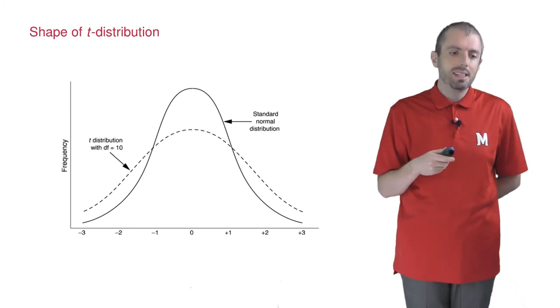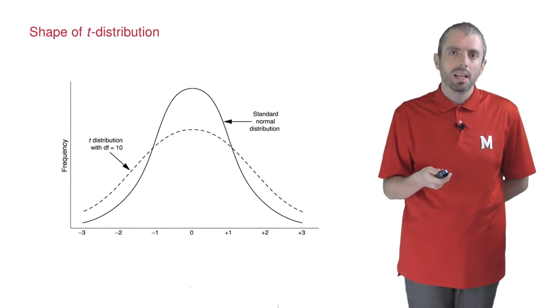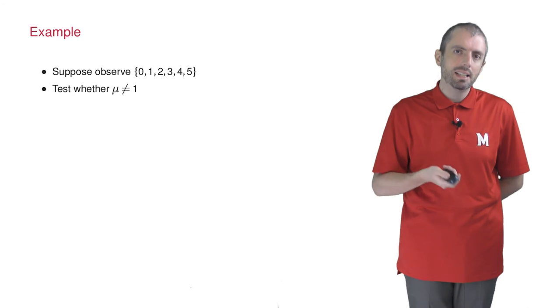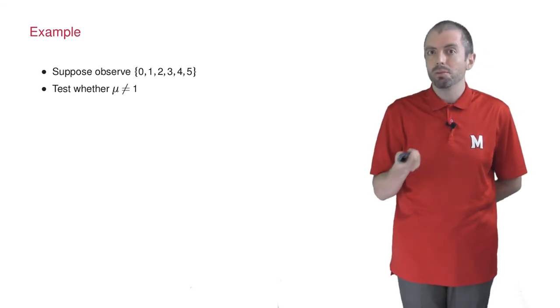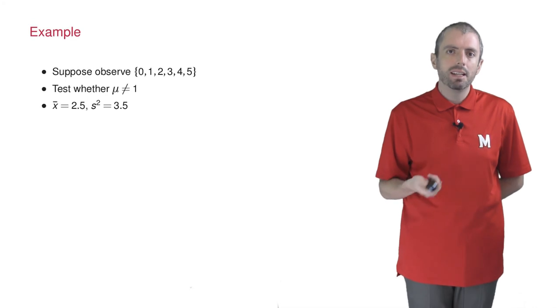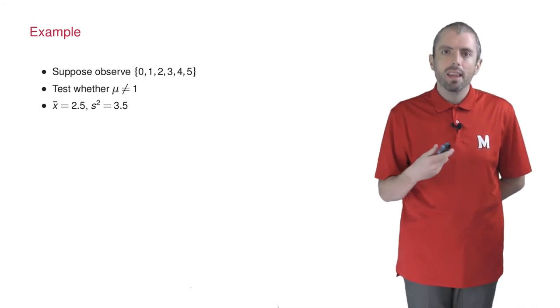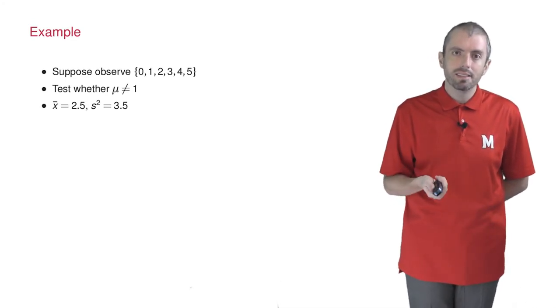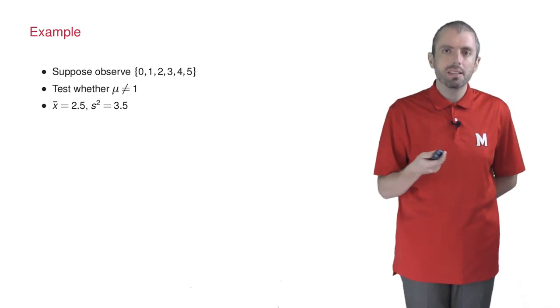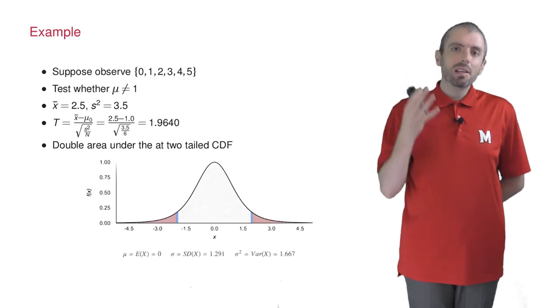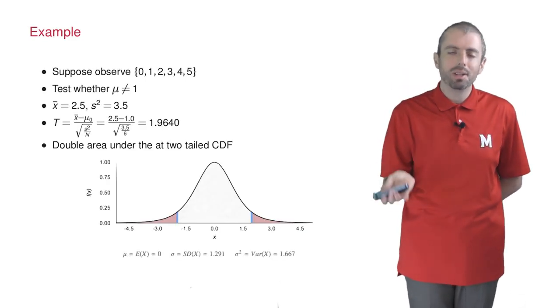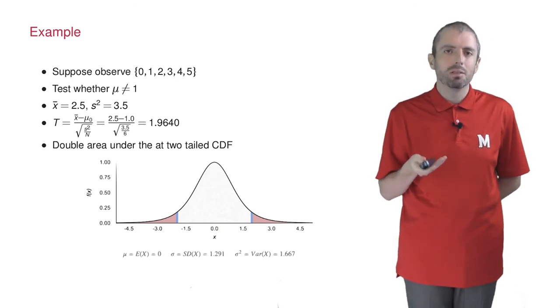So let's see an example. Let's say that you have numbers 0 through 5 and you want to test whether the mean is not 1, a two-sided test. We first compute the mean and sample variance. This gives us a test statistic of 1.96. If you look up the p-value, it's 0.1. This is the closest we've come to rejecting the null hypothesis, but we can't reject the null under the standard 0.05 threshold.